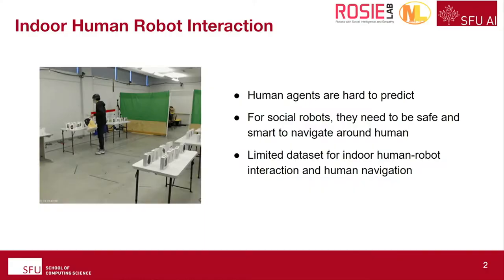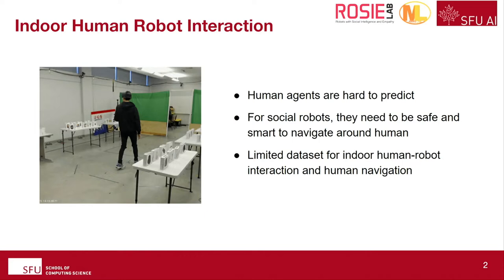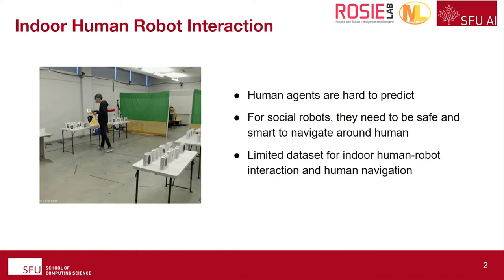Why human navigational intent inference? Our research focuses on an indoor environment where there is potentially human-robot interaction. As we all know, human agents are hard to predict in this environment. For social robots to be socially acceptable, they need to be safe and smart to navigate around humans. Currently, there are only limited datasets for indoor human-robot interactions and human navigations that could benefit robot navigation algorithms.